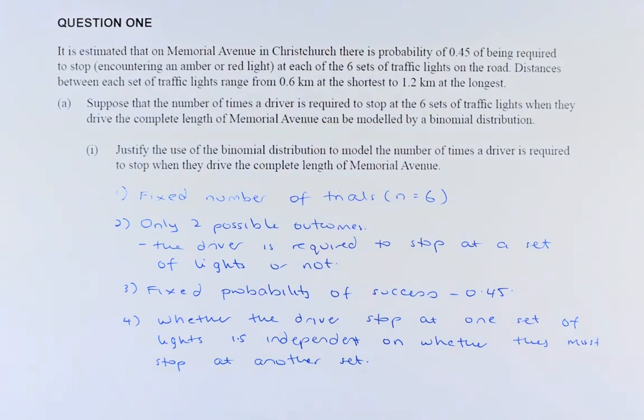So part 1 sounds like this. It is estimated that on Memorial Avenue in Christchurch, there is a probability of 0.45 of being required to stop, encountering an amber or red light at each of the 6 sets of traffic lights on the road.